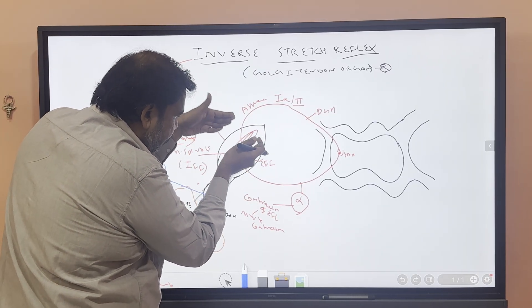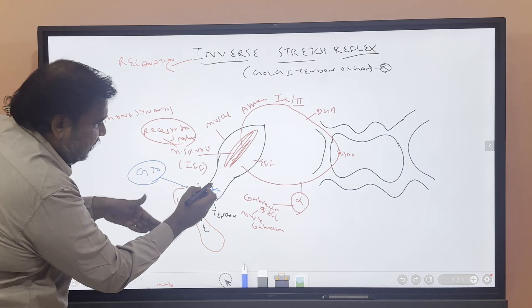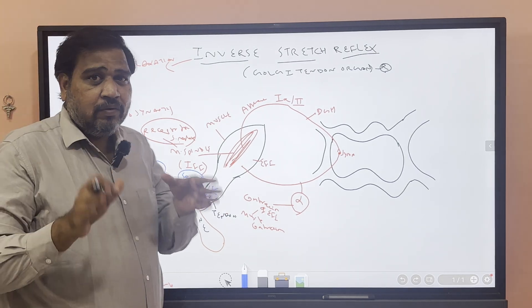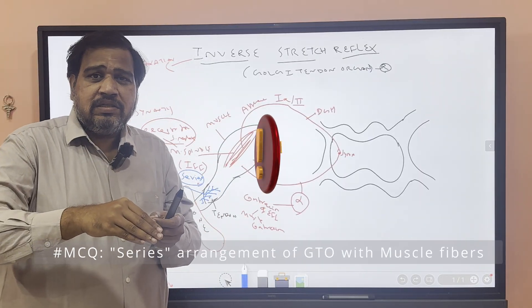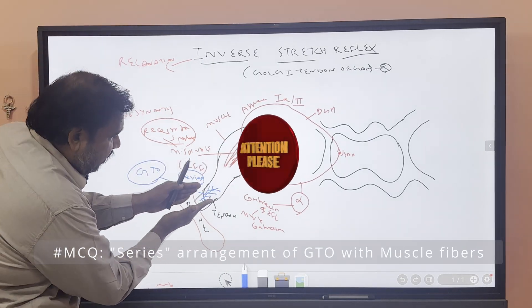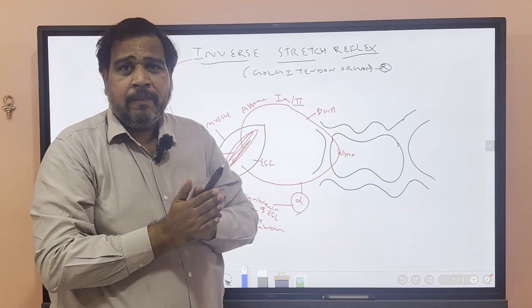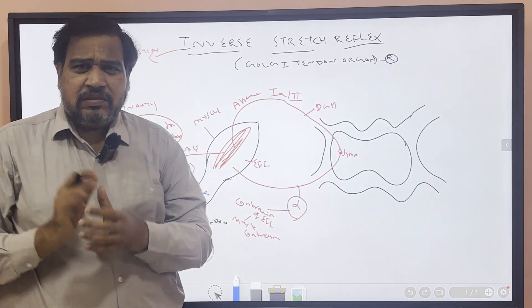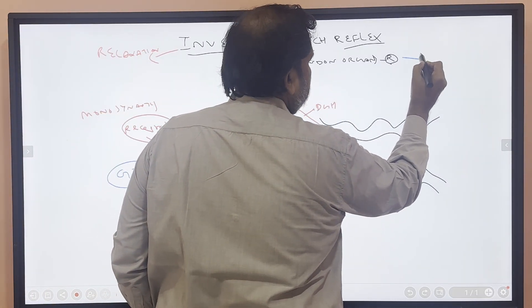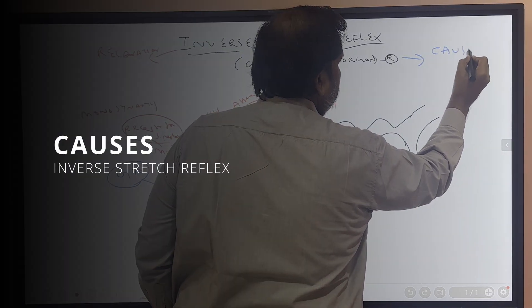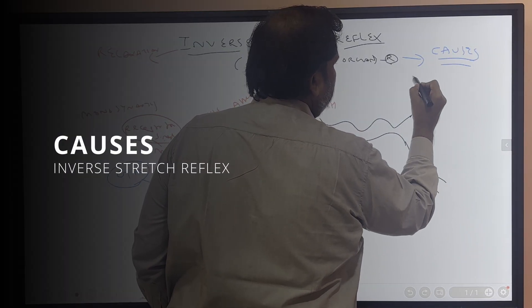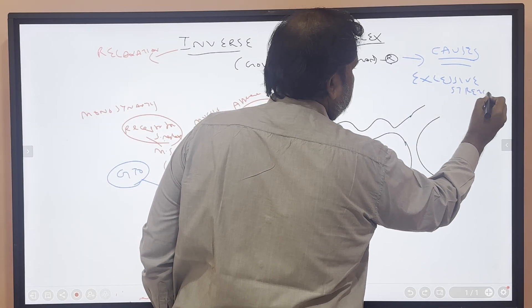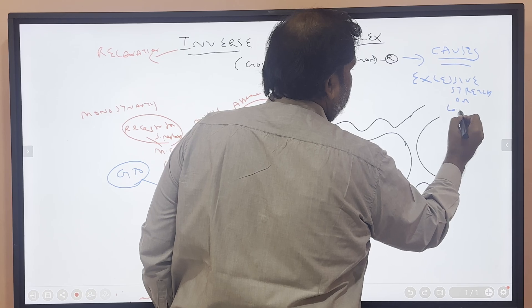This muscle spindle and muscle fibers are in series with the Golgi tendon organ — a common viva question. Golgi tendon organs are arranged in a straight line, in series with muscle fibers. The causes for inverse stretch reflex are excessive stretch or excessive contraction of the muscle.